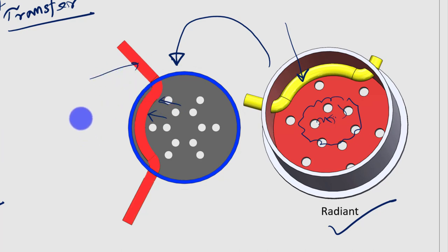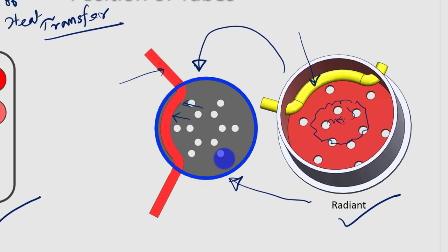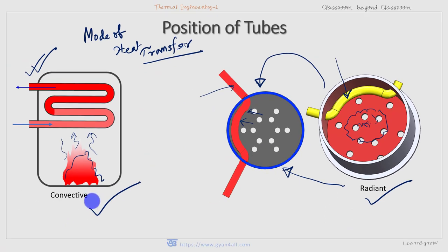In radiant superheaters, the superheater tubes are placed in the walls of the furnace of the steam boiler, where they receive heat by direct radiation from the fire and re-radiation from the refractory walls. In convective superheaters, the tubes are placed between or near the water tubes and receive heat by convection from the combustion gases. In combination superheaters, steam first enters the radiant superheater and then the convective superheater, so heat is transferred both by radiation and convection.